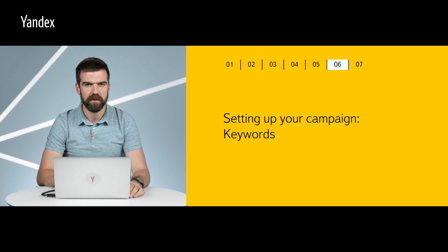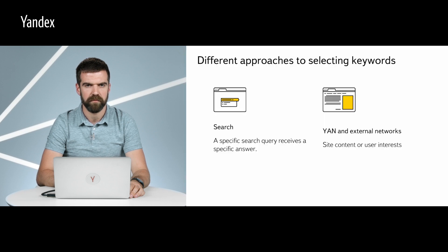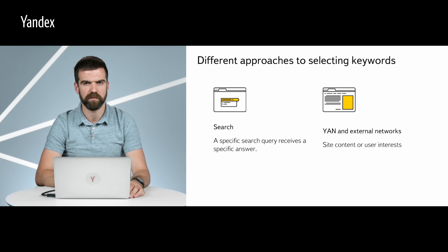Now let's discuss how to choose keywords for your YAN campaigns. There are certain nuances to selecting keywords for campaigns in ad networks. If ads appear on search results pages, everything is straightforward — the user enters a specific query and wants the most specific answer possible. But in ad networks, there is no search query. Instead, we rely on the content of the host site and the user's interests and use them to determine where and what to show them.